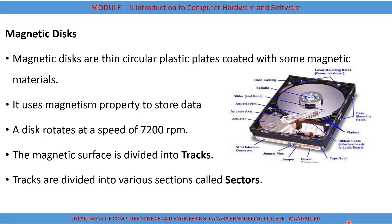The magnetic surface is divided into concentric tracks, and each track is further subdivided into smaller segments known as sectors. Each sector can hold a fixed number of bytes — for example, 256 bytes or 512 bytes. What we see here is an example of a magnetic disk, that is, the hard disk.